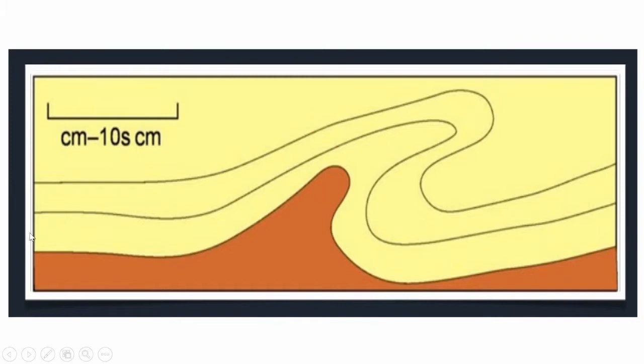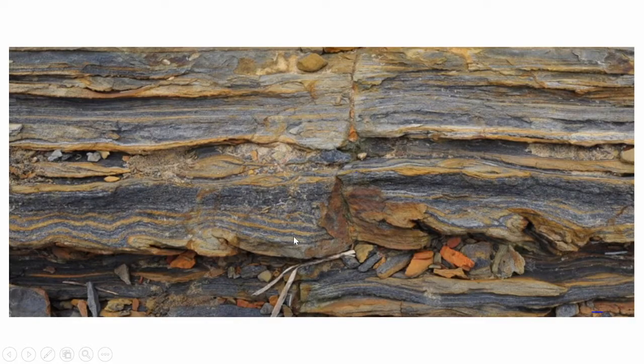As you can see on the diagram here, a convoluted structure has formed into an irregularly shaped anticline and syncline, and there are a couple of laminations above it. Here is a real-life example of a convoluted structure forming irregular anticlines and synclines in the layers.